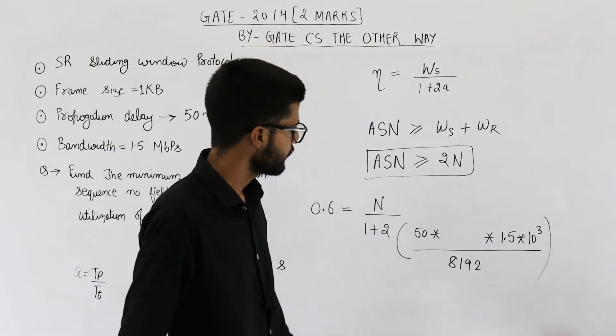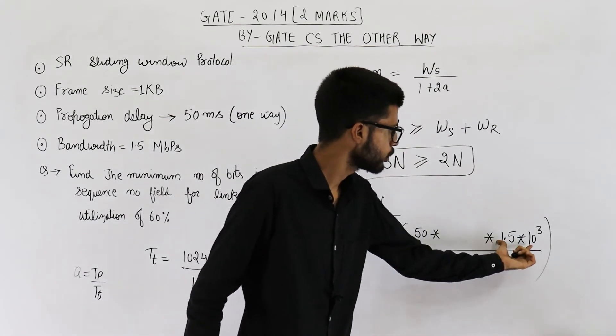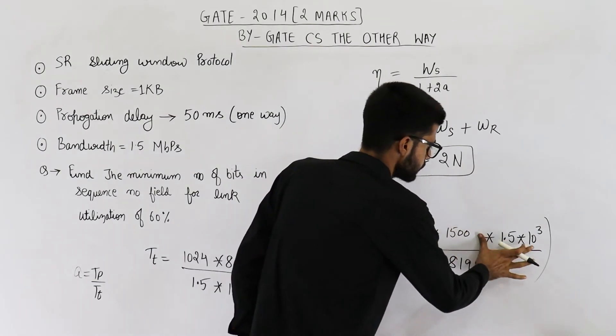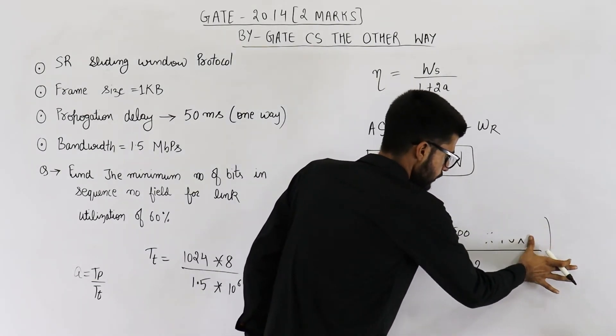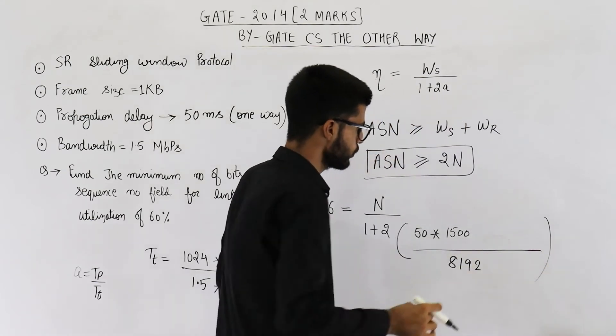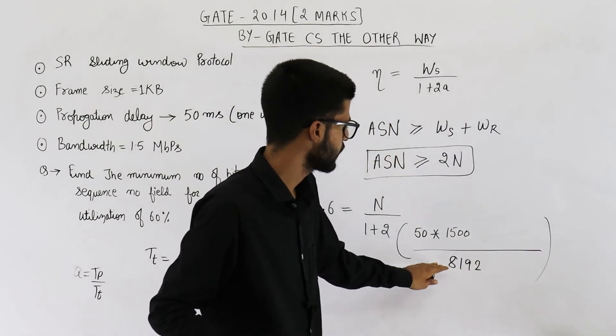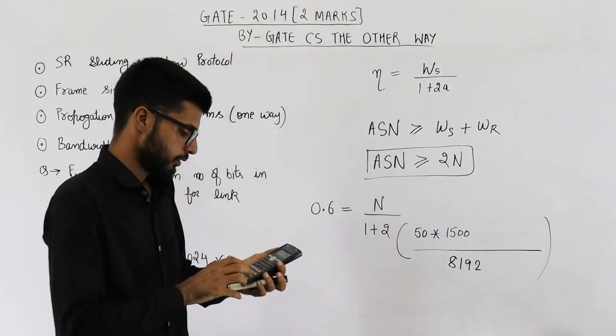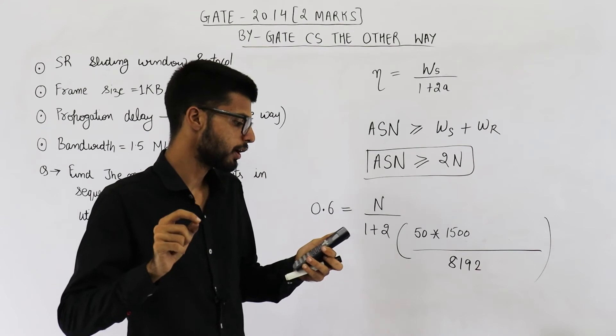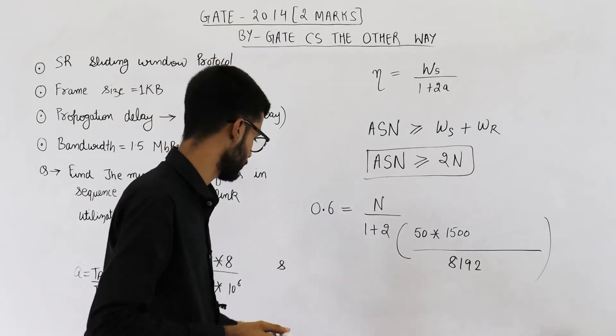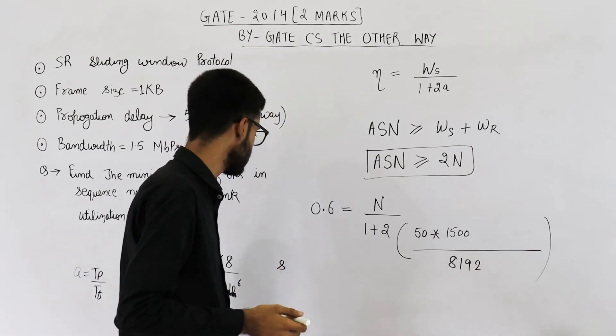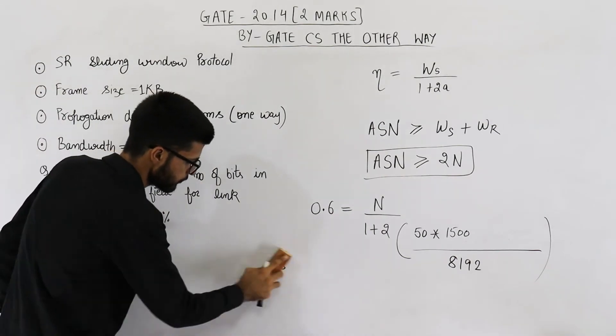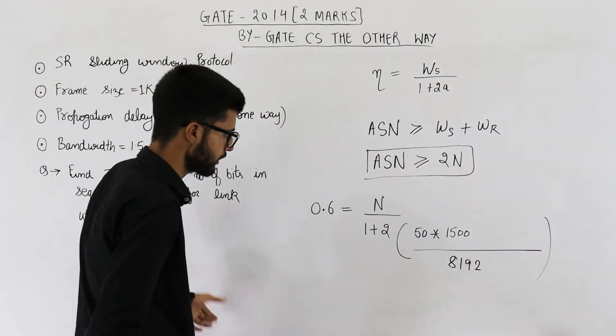Now you are left with 50 into 1500. So this is 50 into 1500 into, that's 50 into 1500, 1500 divided by 8192. This is 9.155. So you are getting 9.155. Let me clear some space. So I am writing the next step here.